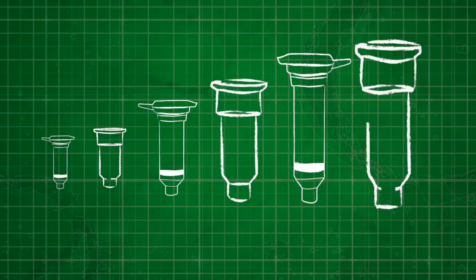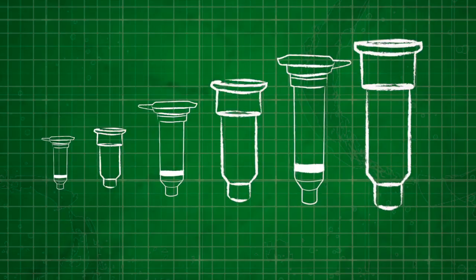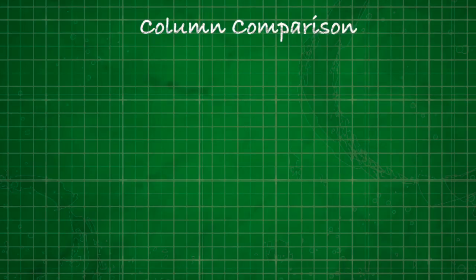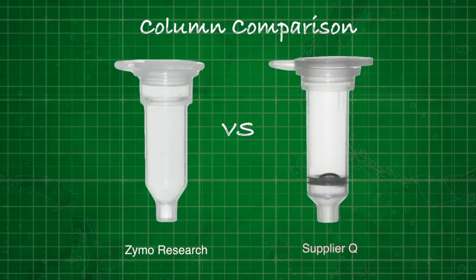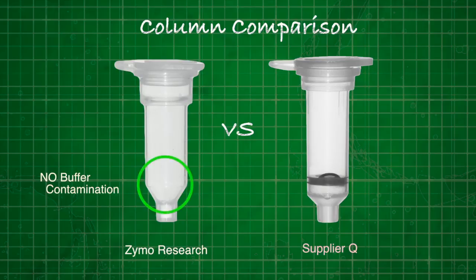Columns come in different shapes and sizes, but not all of them work as well as others. Here's a classic example. Take a look at the column on the left. Now the one on the right, back to the one on the left. See a difference?